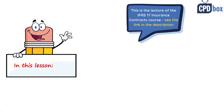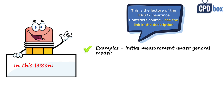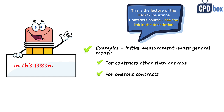In this video we will solve a practical example to illustrate the initial measurement of a group of insurance contracts using the general model. First we will solve the example when the group of insurance contracts is not onerous — assumed to be profitable — and then we will look at the example when the group of insurance contracts is onerous, i.e. loss-making, right at initial measurement and recognition.